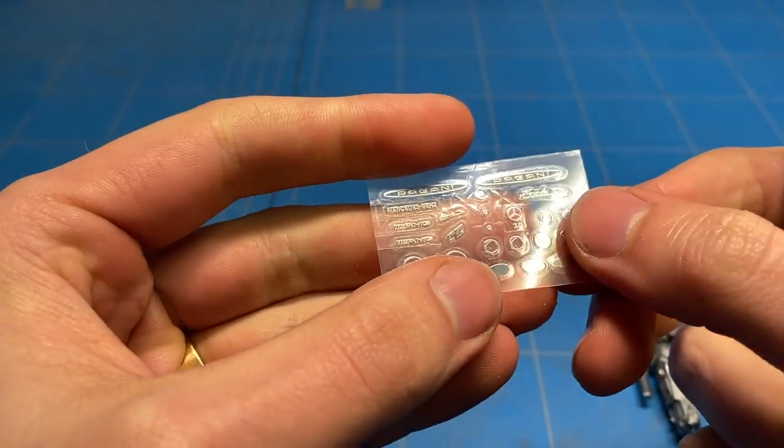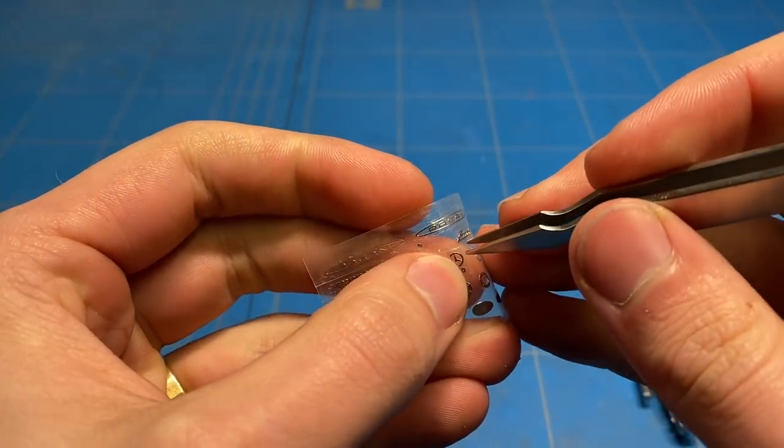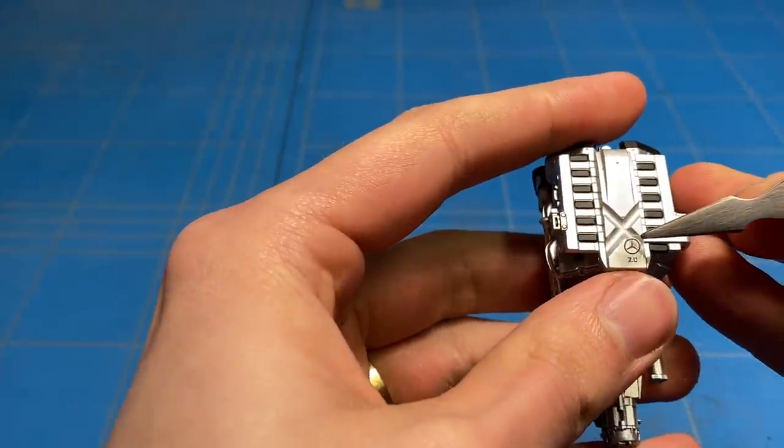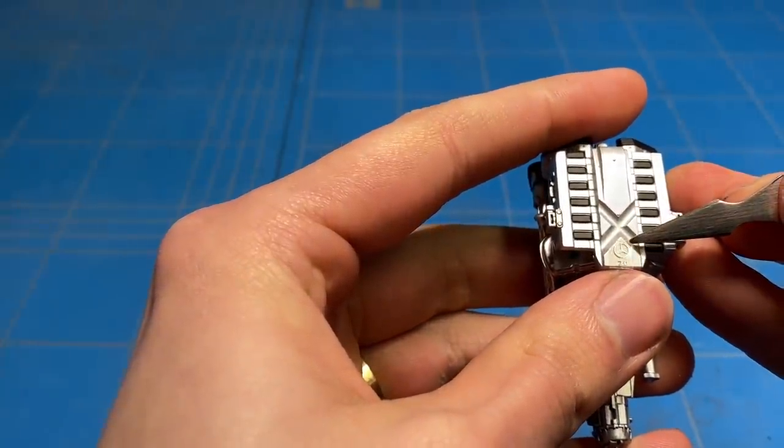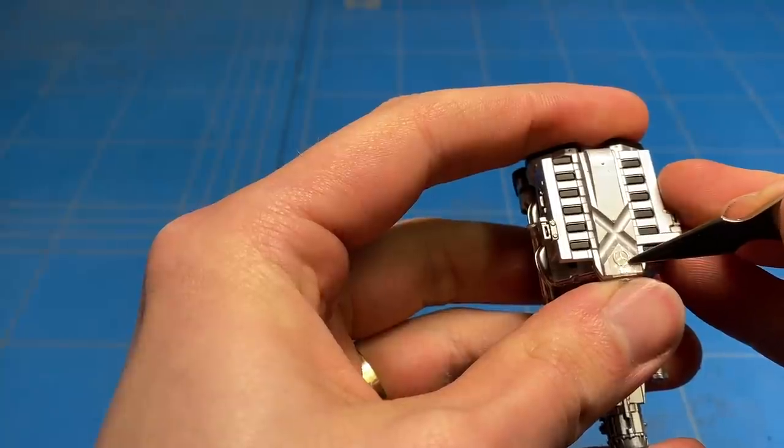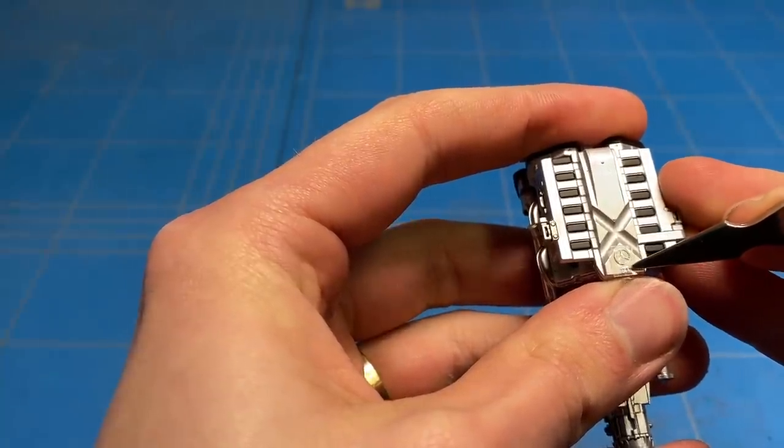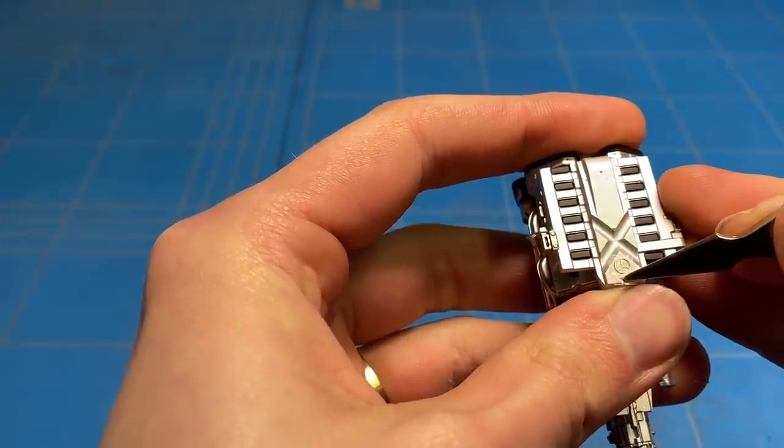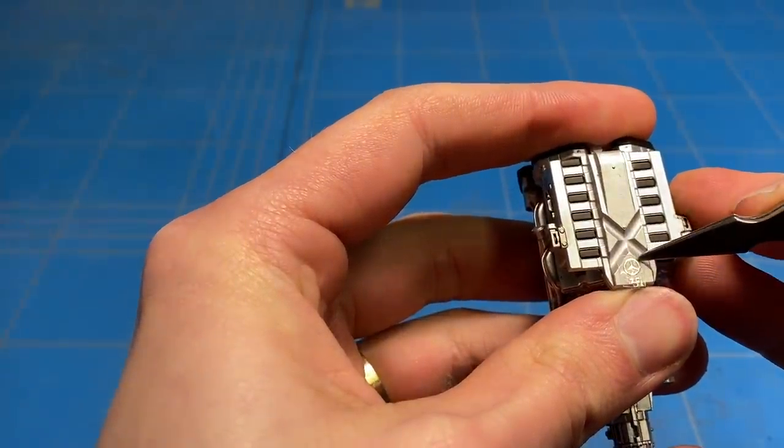In the kit there's a decal sheet with various logos to go onto the engine and other pieces. Luckily, Aoshima also supplied me with an additional photo etch sheet which came with a small decal or actual metal sticker sheet to replace a lot of those decals and make it more realistic. These were put onto the engine to finish those details off as well.